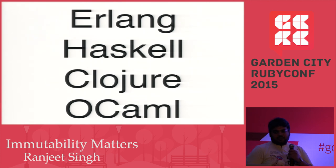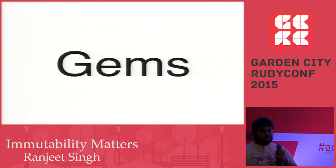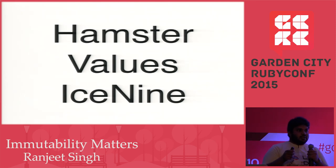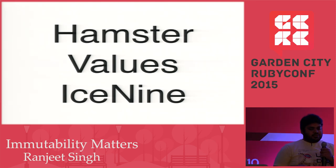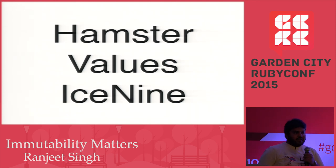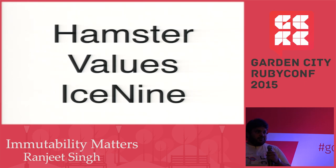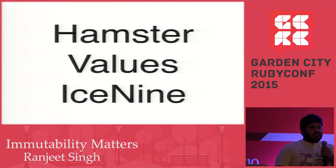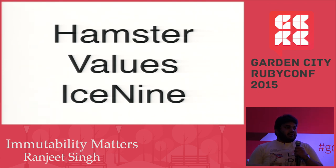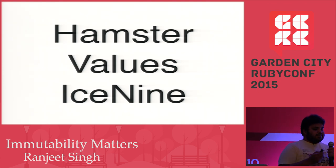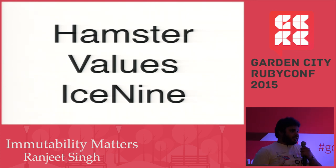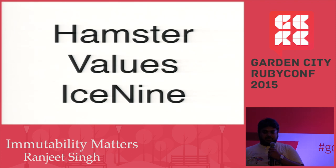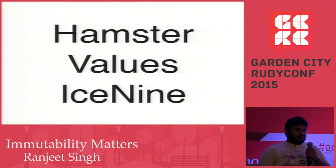You don't need a different language to write functional code — you can use Ruby with certain gems. These gems make your code more functional, though not completely. Hamster is a persistent data structure library — when you add an element to a list, it returns another list. Values helps you create value objects easily. Ice9 will deep-freeze your objects — if you have mutable objects, it creates immutable objects for you.